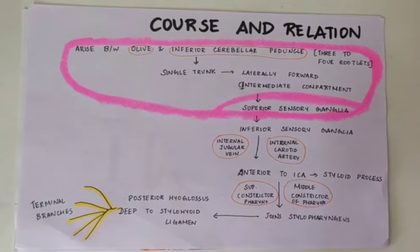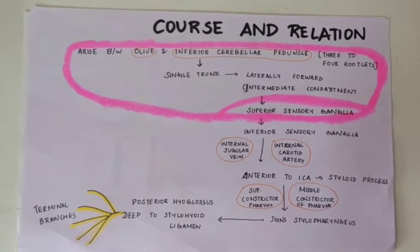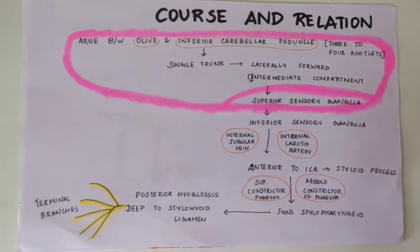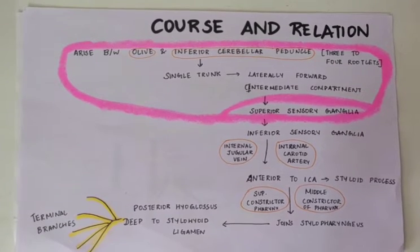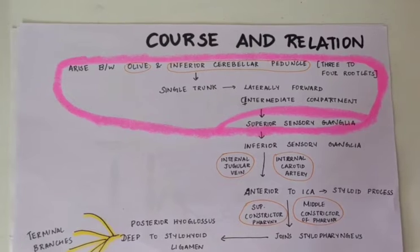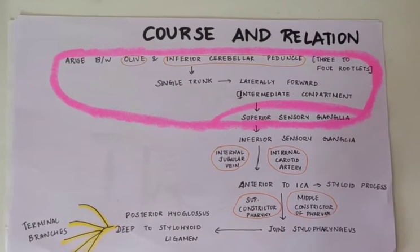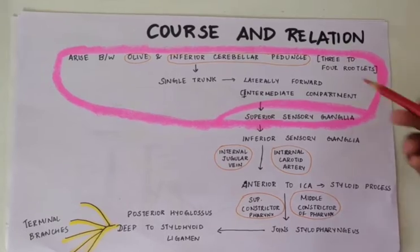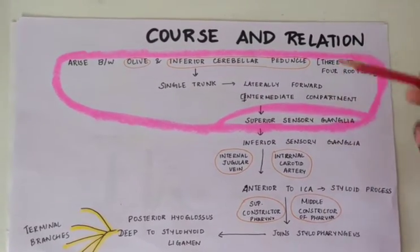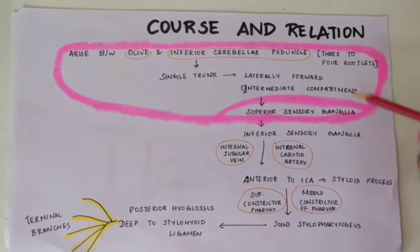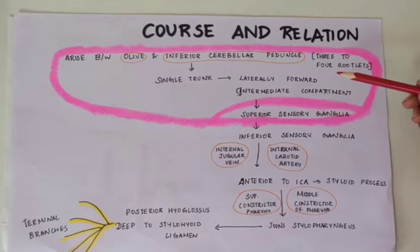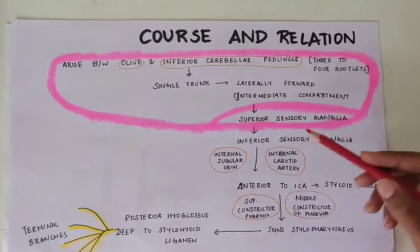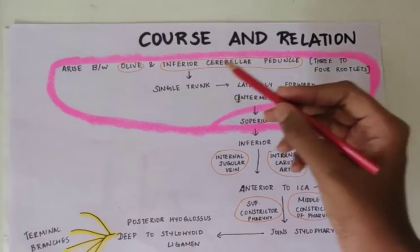Now that we've seen the functional components, let's see the course and relation of the glossopharyngeal nerve. Before looking at the diagram, let's go through a flowchart so it's easy to remember. The glossopharyngeal nerve is a fairly straightforward nerve, though students often find the course and relation difficult. Starting from where it begins: the nerve arises from three to four rootlets in between the olive and the inferior cerebellar peduncle, which then form a single trunk.